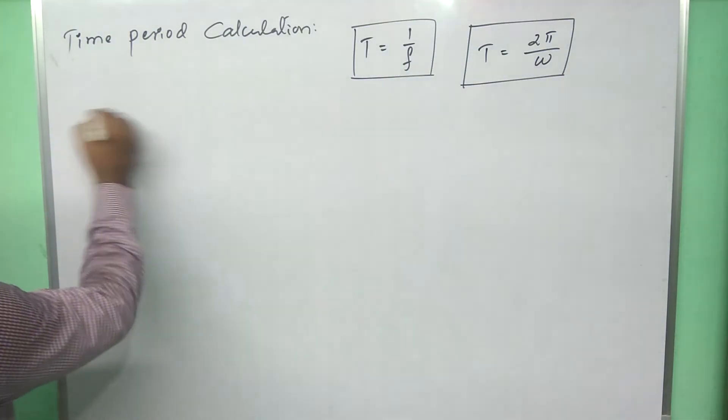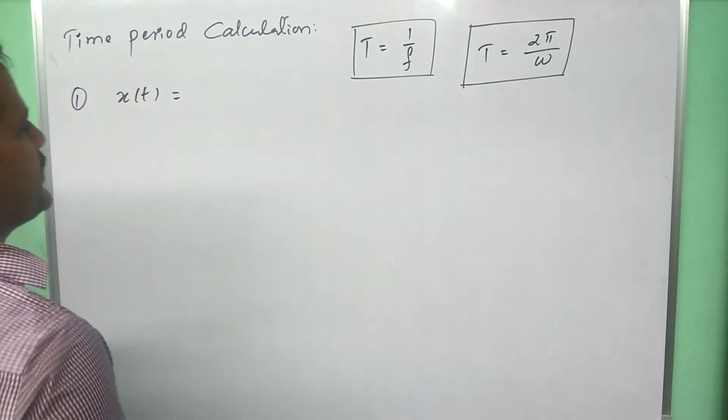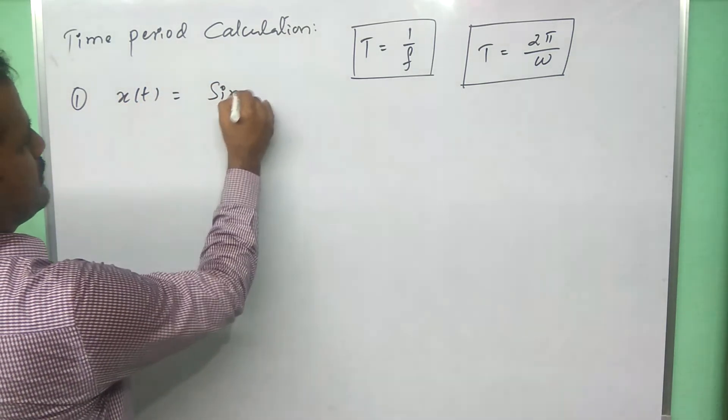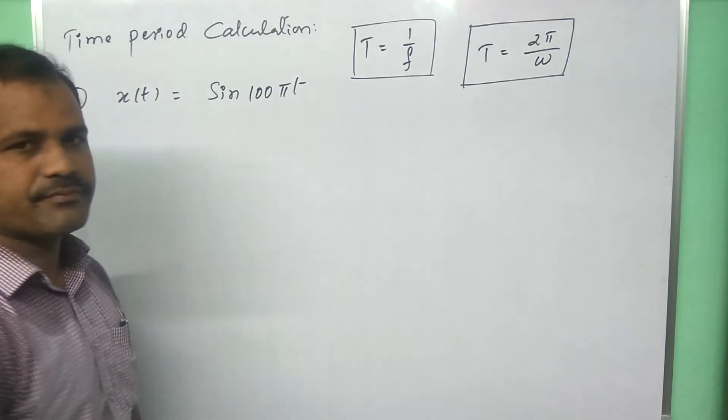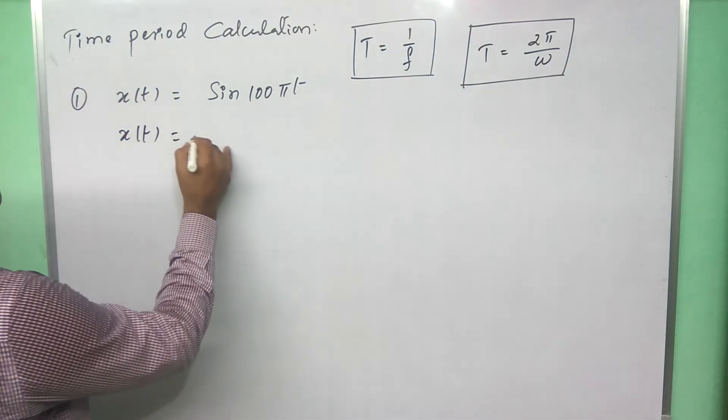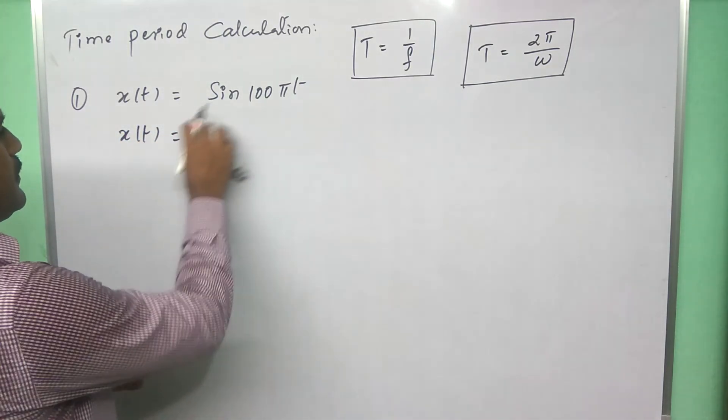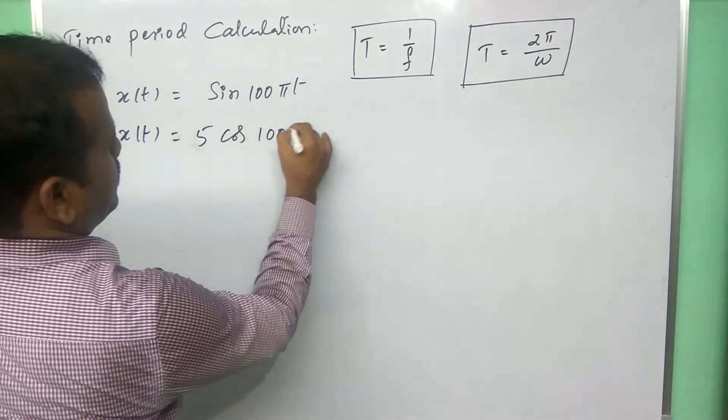Let us consider the example. X of t, if it is sine 100 pi t and X of t, sum 5 cos 100 pi t.